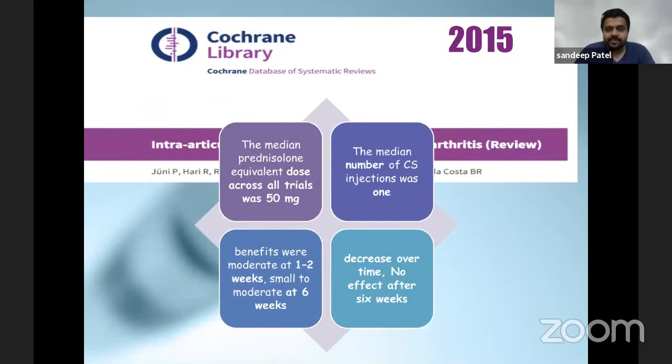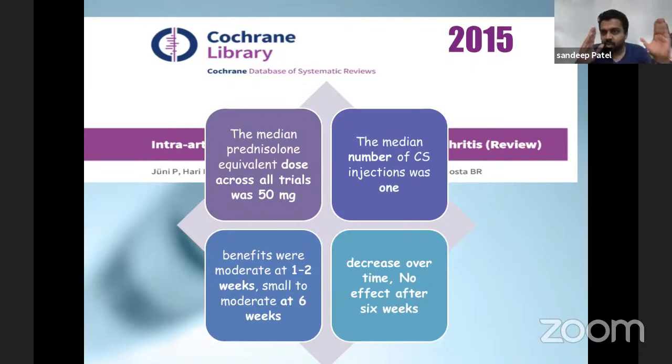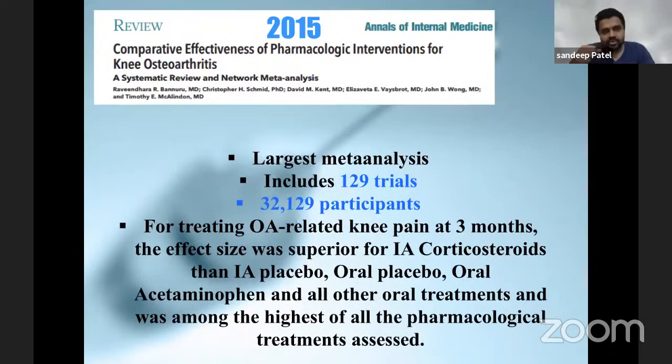The Cochrane 2015 review summarizes the evidence as follows: the dose equivalent across all trials was 50 milligram. The median number of injections recommended is one. Benefits were moderate at one to two weeks - that was the best benefit period. At six weeks, it was small to moderate, and there was literally no effect after six weeks. That is, it has got a short-term role.